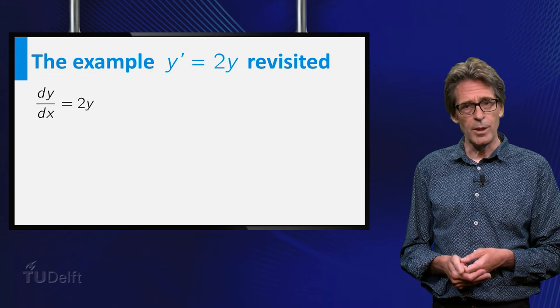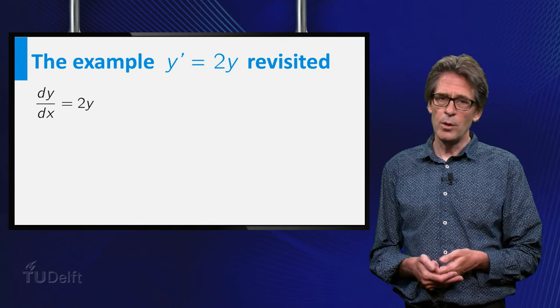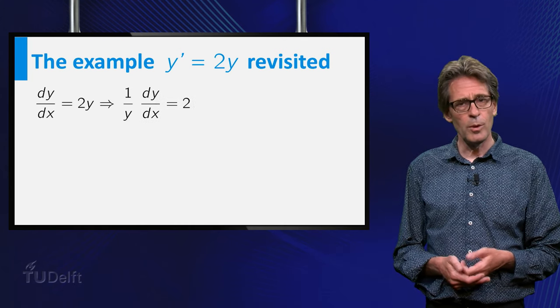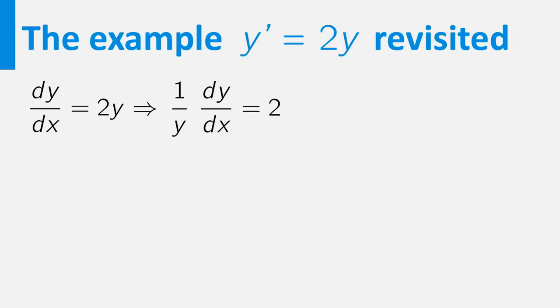Note that y prime equals 2y is a separable differential equation. You can rewrite it into the form 1 over y times dy dx equals 2. Of course division by y is allowed only if y is not equal to 0. So before we divide, we have to exclude y is 0. In fact, this constant function with value 0 is a solution of the original equation y prime equals 2y.